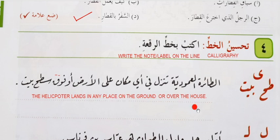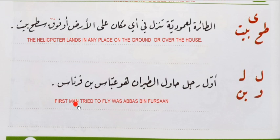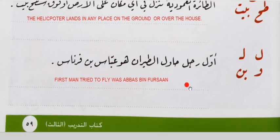Awal rajul hawal al-tairan huwa Abbas ibn Fursan — the first man who tried to fly was Abbas ibn Fursan. Ha-wal means tried. This is the first part of Lesson 14, Al-Tairan, and it is now finished.